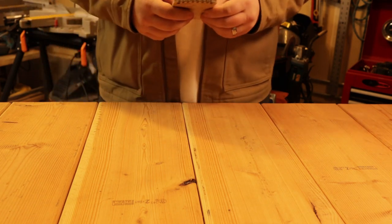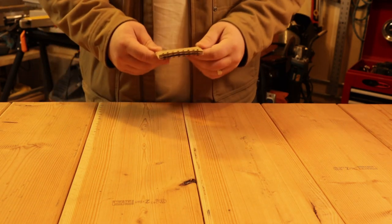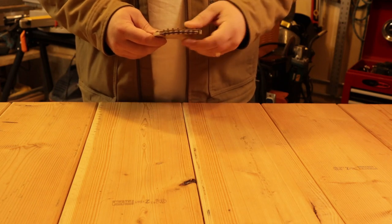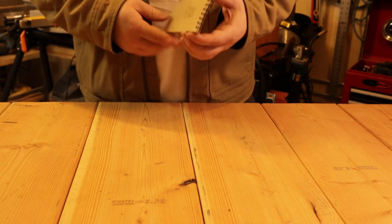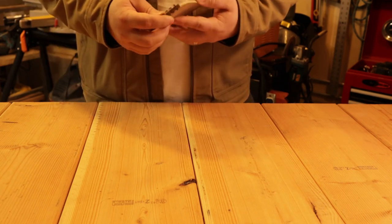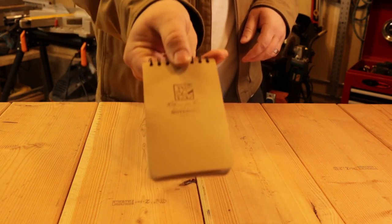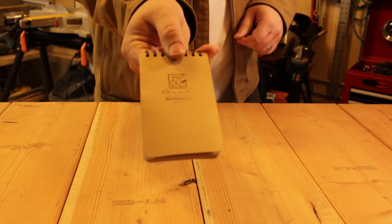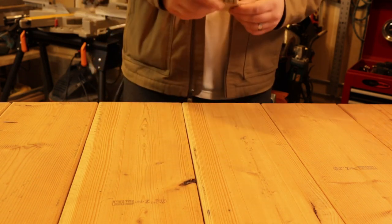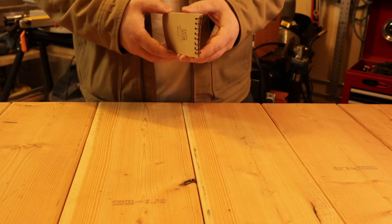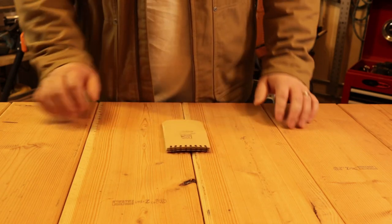Number one on the list is a notepad. I remember the first day I started, that was one of the first things that one of the old-timers told me. He said every good tech has a notepad, and I've kept that with me over the last 10 plus years in the trade. I like to carry these Rite in the Rain notepads. The paper doesn't get soggy and lose the ink.